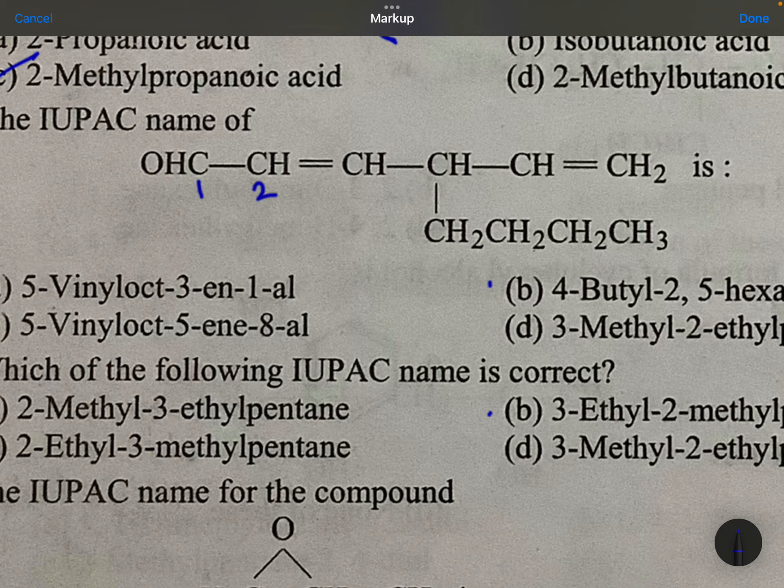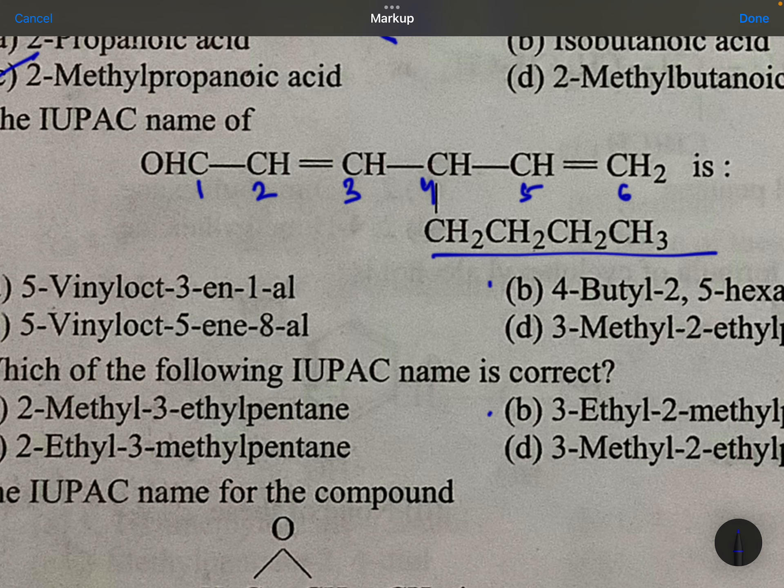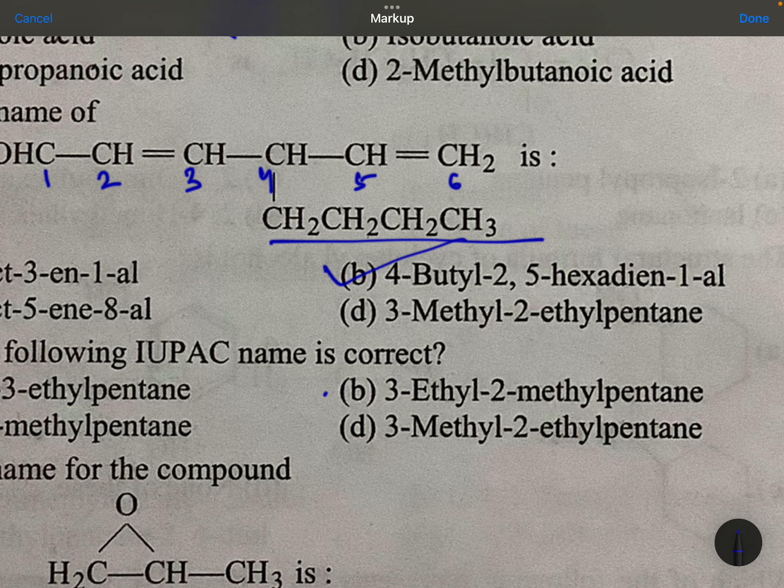Start from here. 1, 2, 3, 4, 5, 6. Don't worry of the long chain. Go with maximum number of carbons with double bonds and all. Fourth place, you have butyl. 4-butyl, 2, 5-hexadien-1-ol.